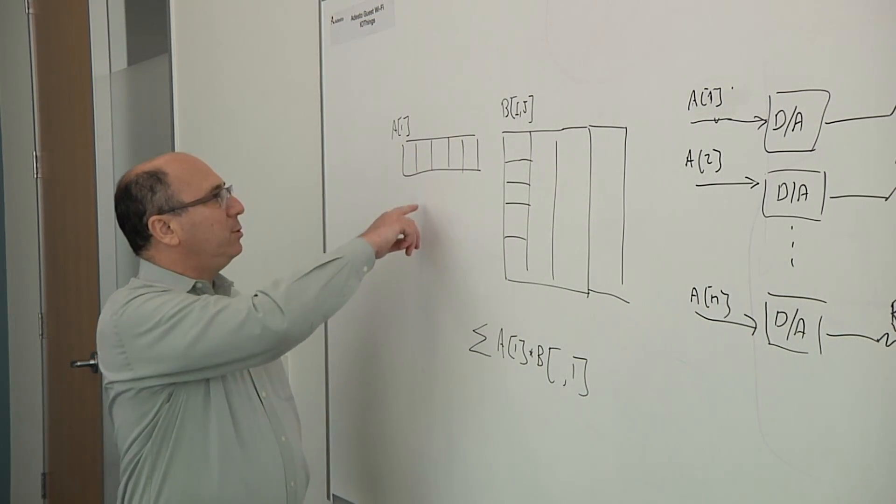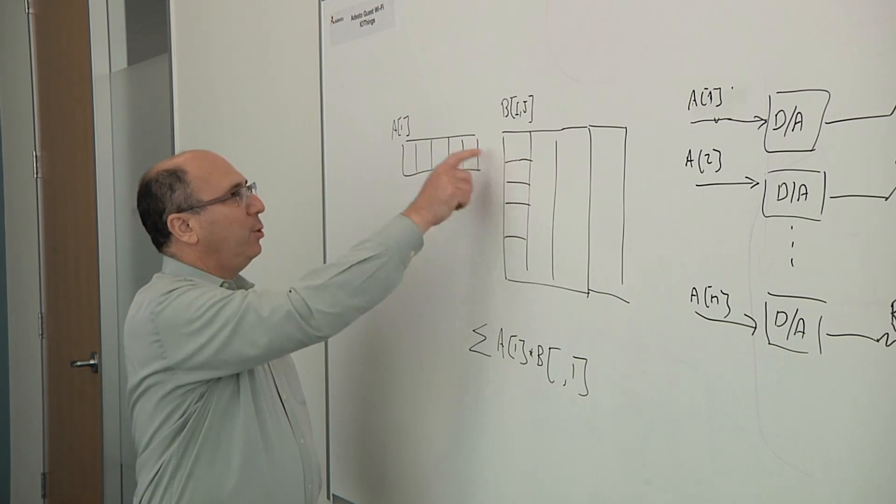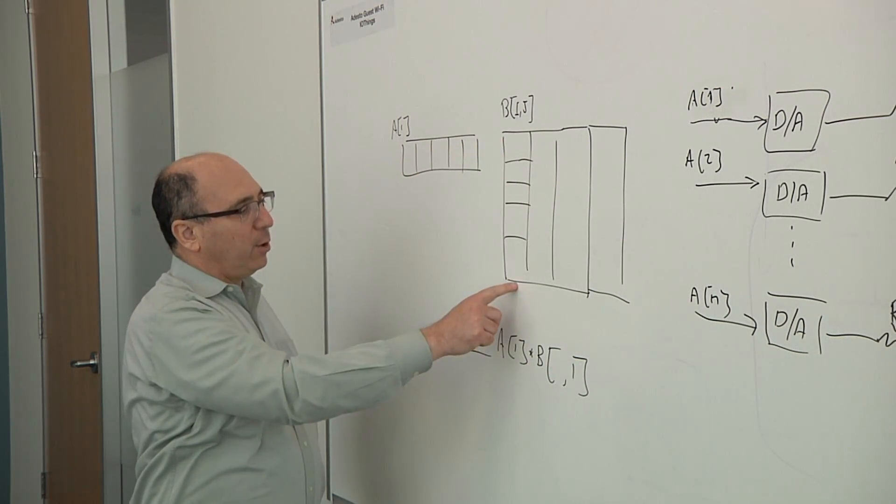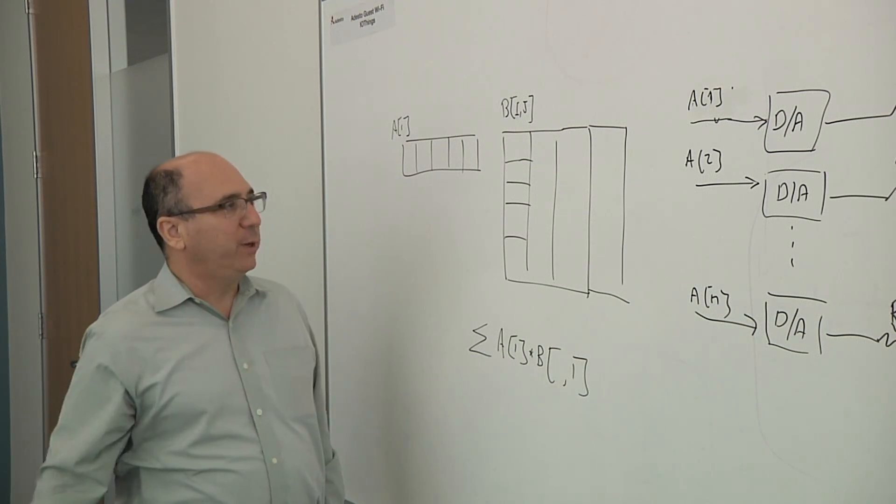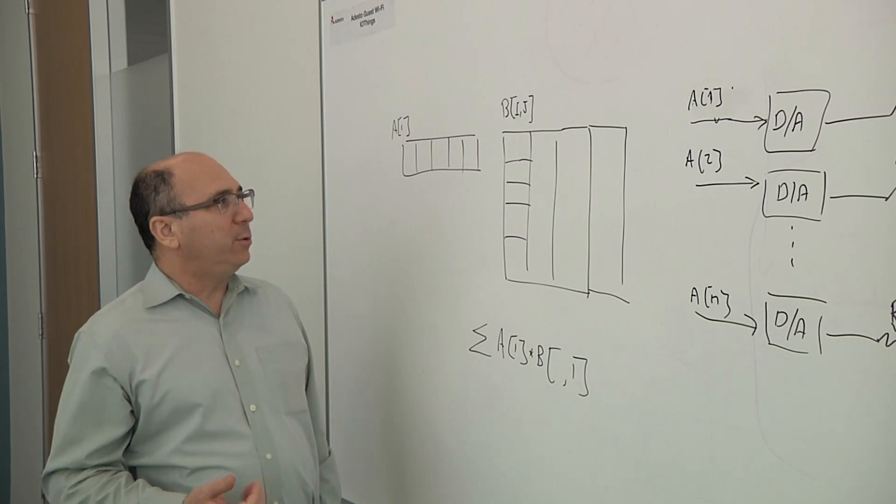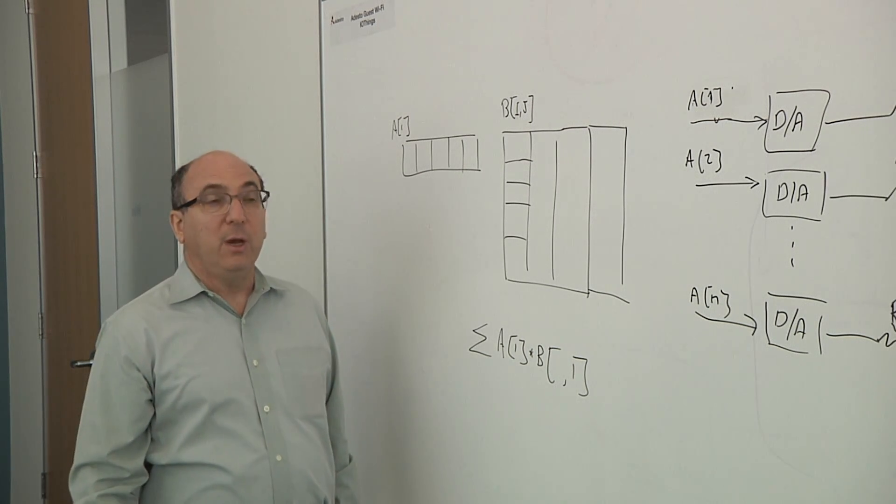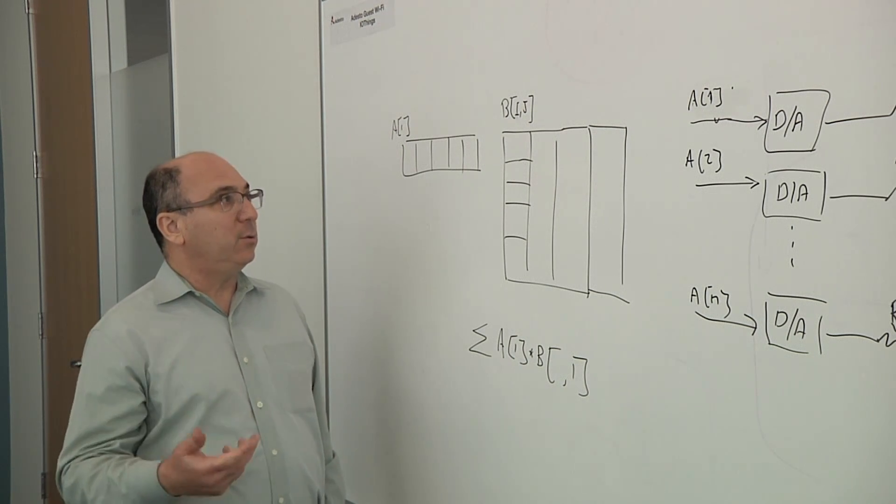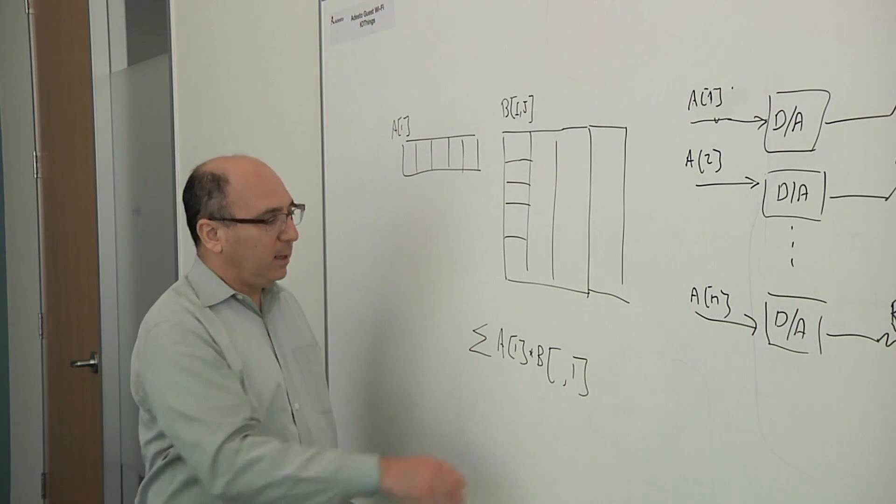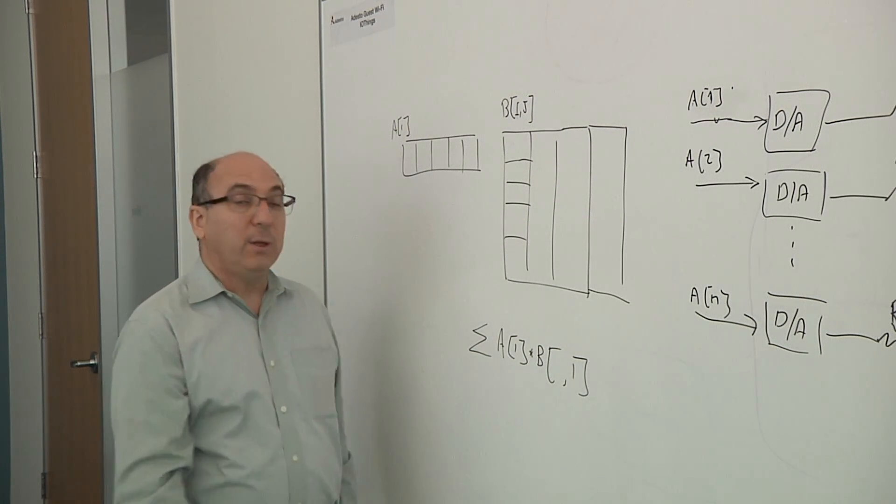So pretty much what you do, the operation is take this value times that value, keep going like that, and add all of them up to pretty much perform this sigma operation that we have here. So in order to do that with a digital design, what you need to do is bring each and every one of these vector elements into the processing unit and then do the multiplication and then later on or in parallel sum it all up.